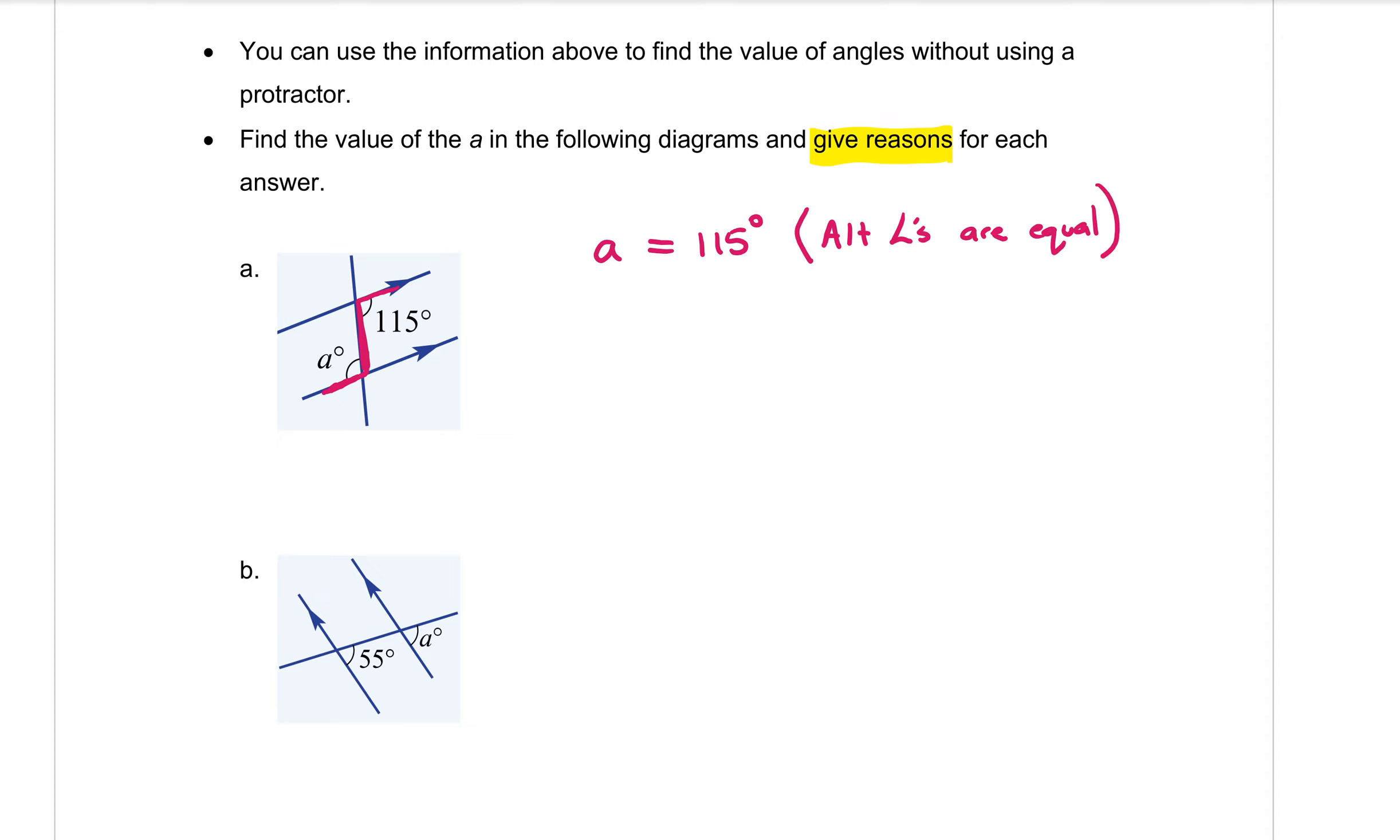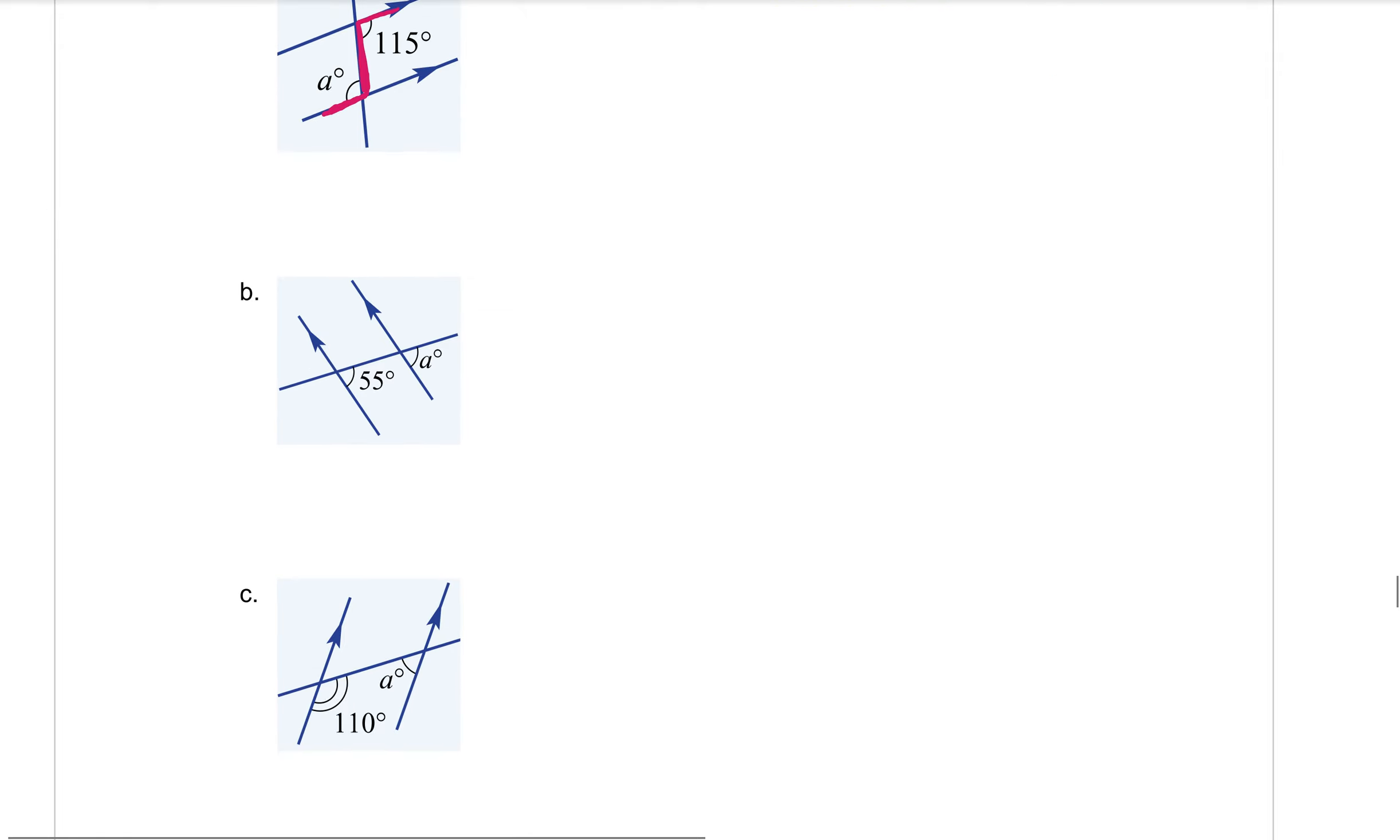On to part B. Okay, let's draw the arms on there. The arms of the 55. The arms of the A. So sometimes you need to just make the arms a bit longer to join them up. And you can see that that's kind of an upside down back to front F shape. So those ones were called corresponding angles. And they are always equal.